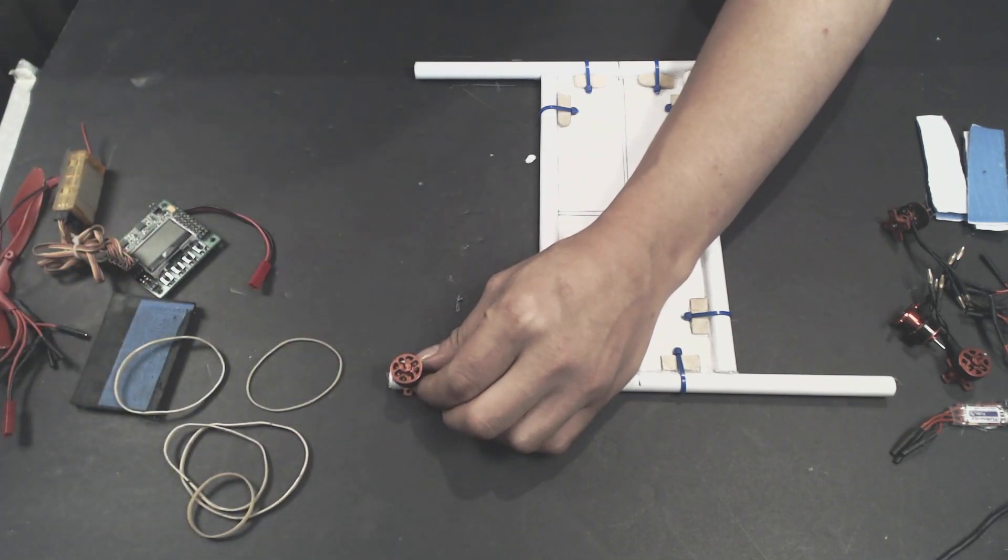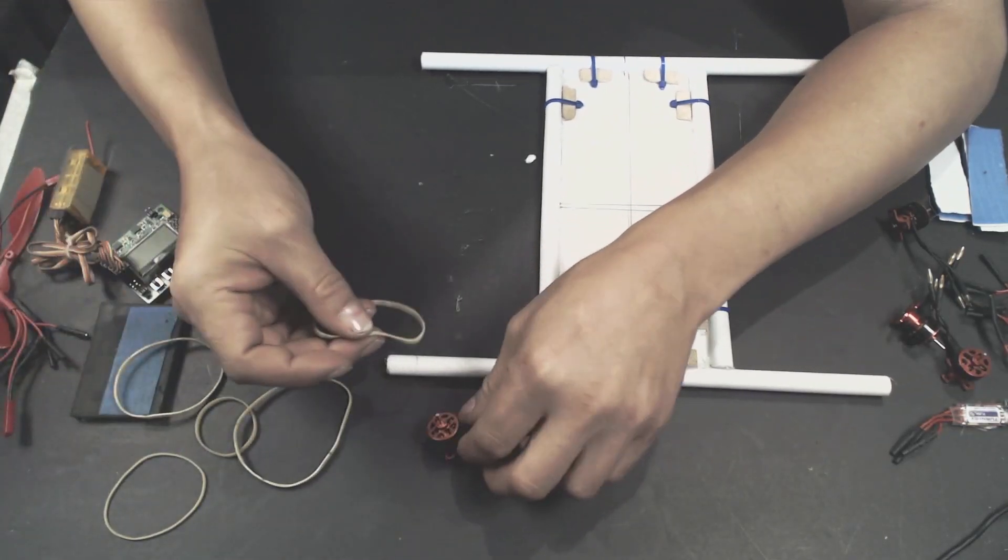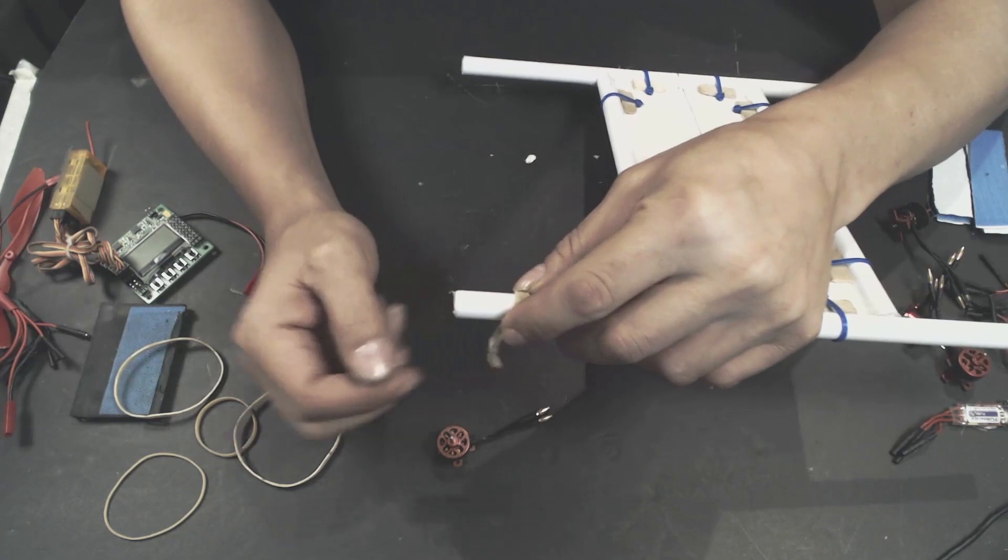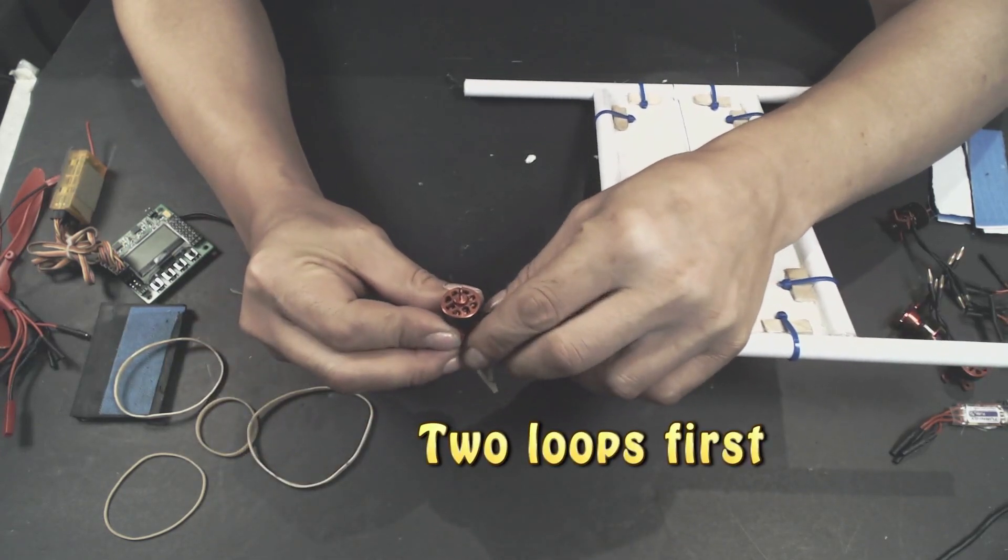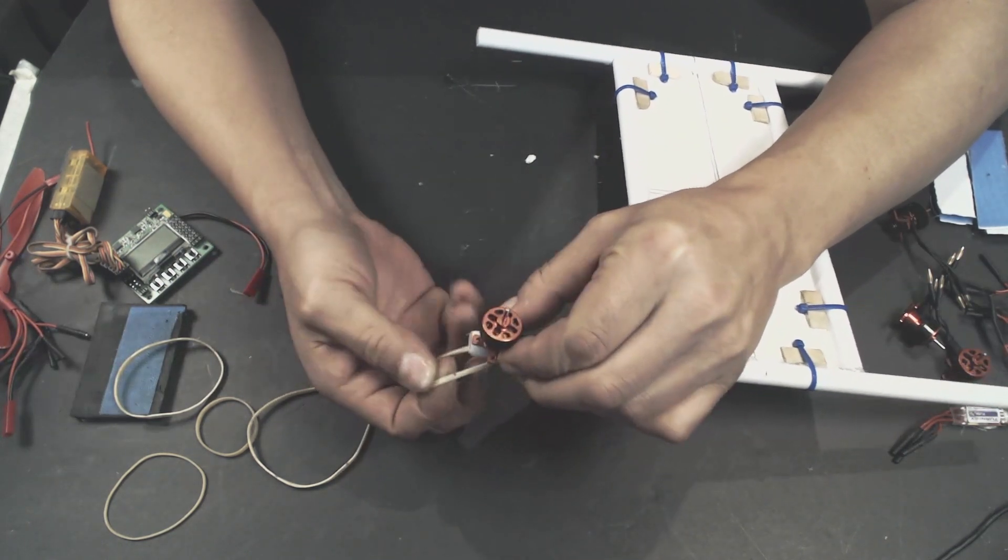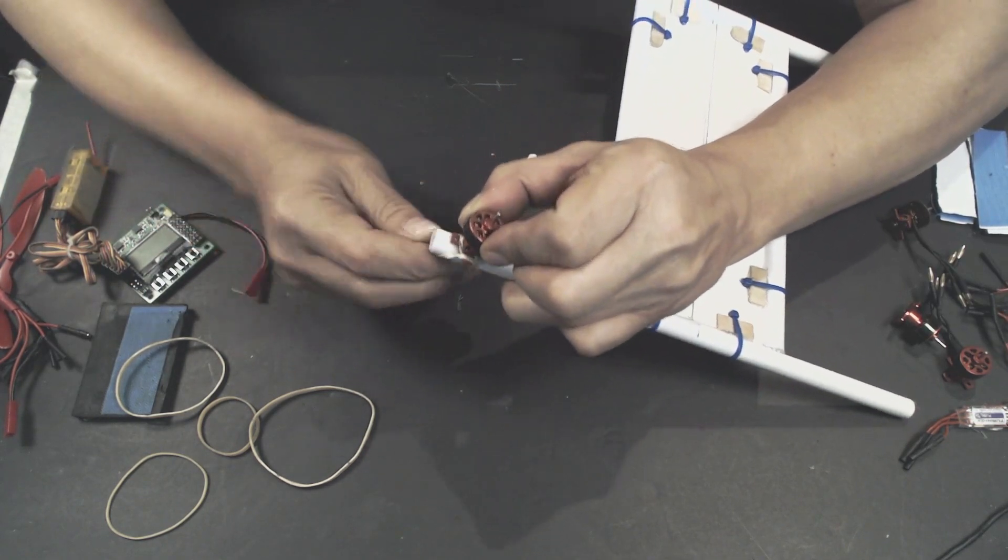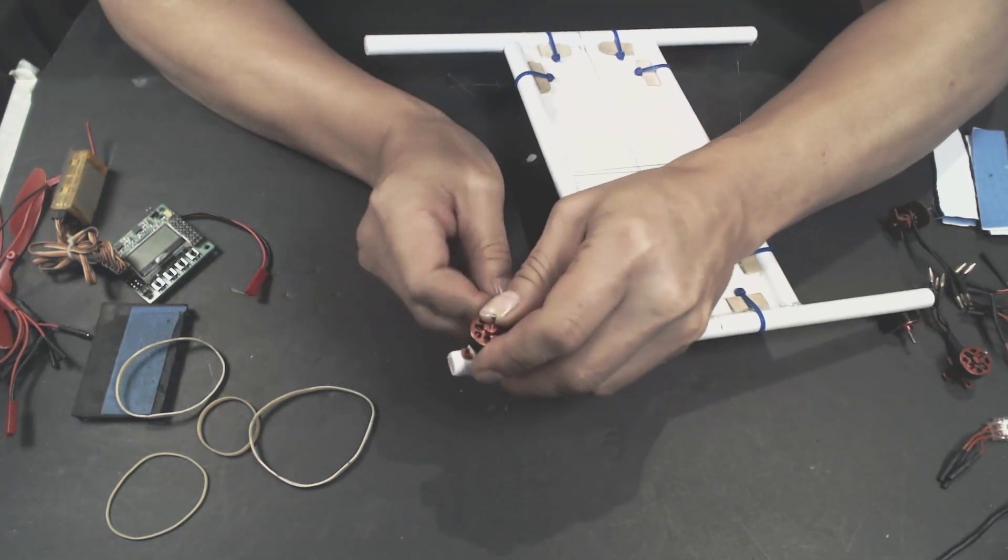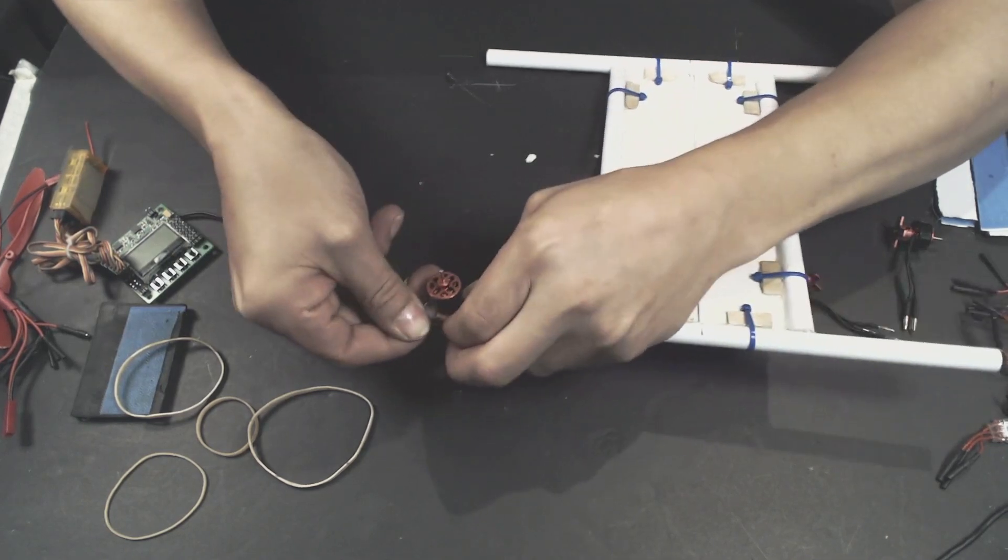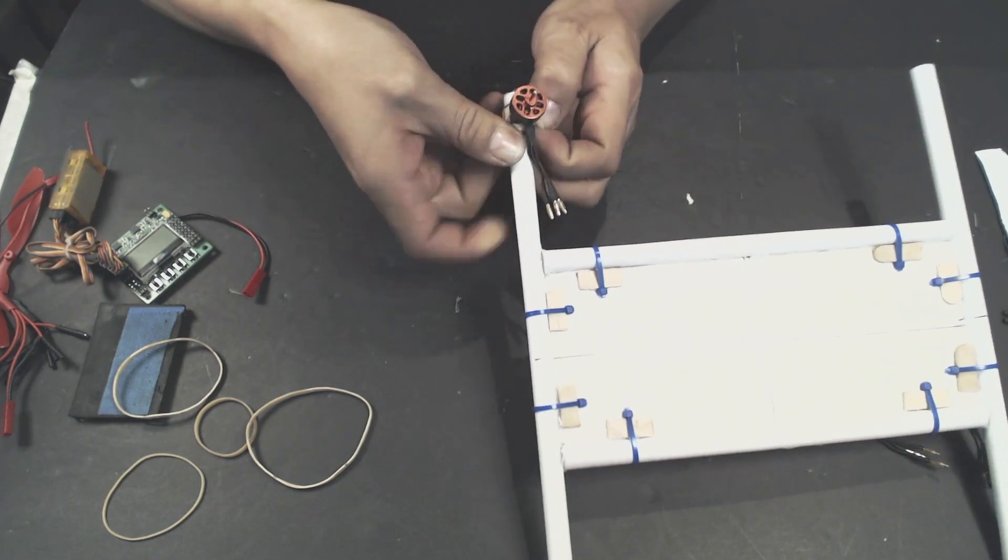We're going to take a rubber band first and wrap it two times around the arm. Get it close together, then slide the foot of the motor mount through it and pull tight. Then come around the front foot, then on the side foots, and then the other side foot on the back. We're going to keep doing this until we have a secure mount.